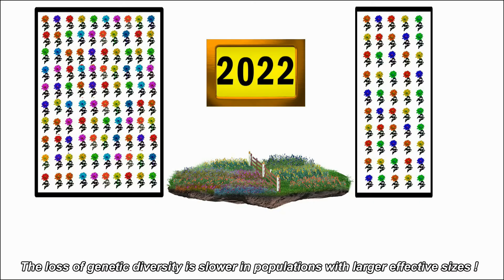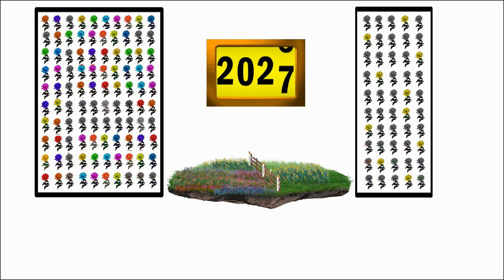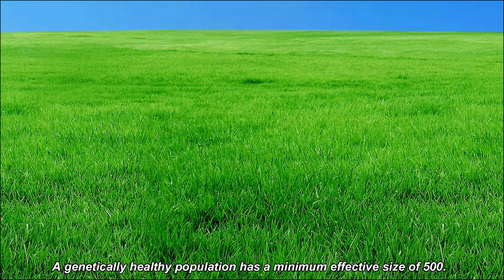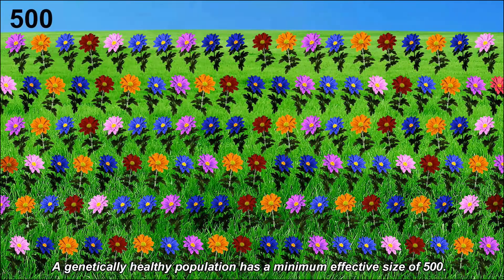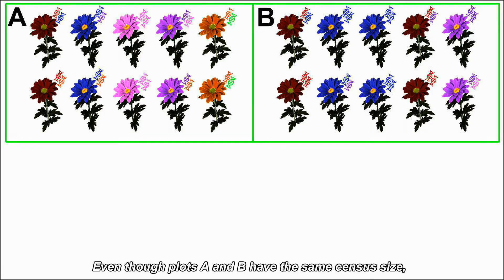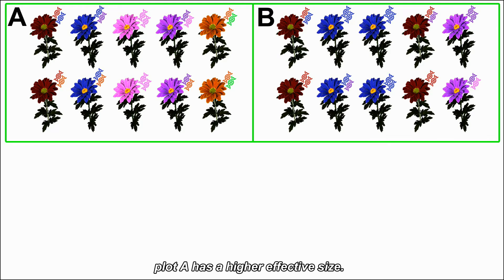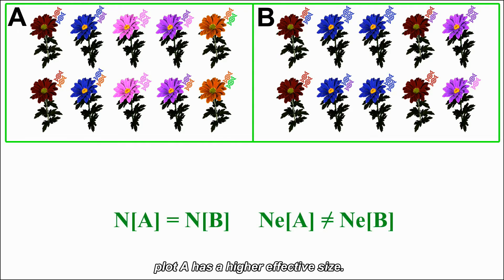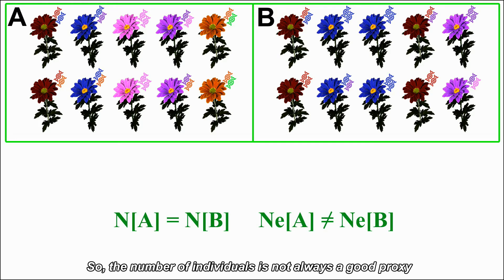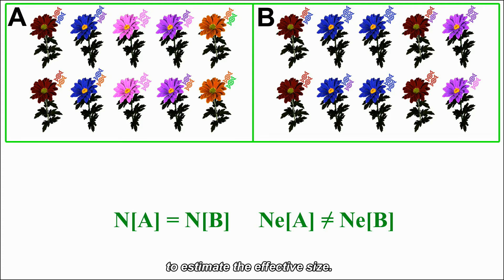The loss of genetic diversity is slower in populations with larger effective sizes. A genetically healthy population has a minimum effective size of 500. Even though plots A and B have the same census size, plot A has a higher effective size. So the number of individuals is not always a good proxy to estimate the effective size.